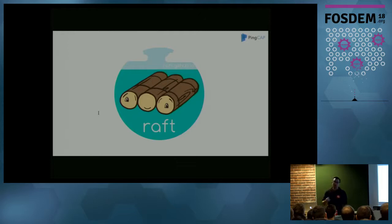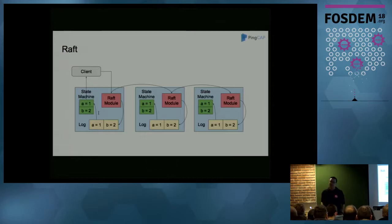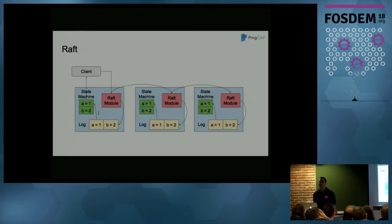RocksDB is cool, but it can only save your data on one local machine. If that machine crashes, your data is lost. So here we need to find a way to replicate our data onto multiple machines to guarantee data safety, and we must guarantee data consistency. Here we use Raft. Raft is a distributed consensus algorithm based on the replicated log. When the client wants to write something to the service, we use Raft to append the command to multiple machines. After the majority of nodes accept the Raft log, we consider it committed, apply it to the state machine, and return the result to the client. Using Raft keeps data consistency and does replication automatically.